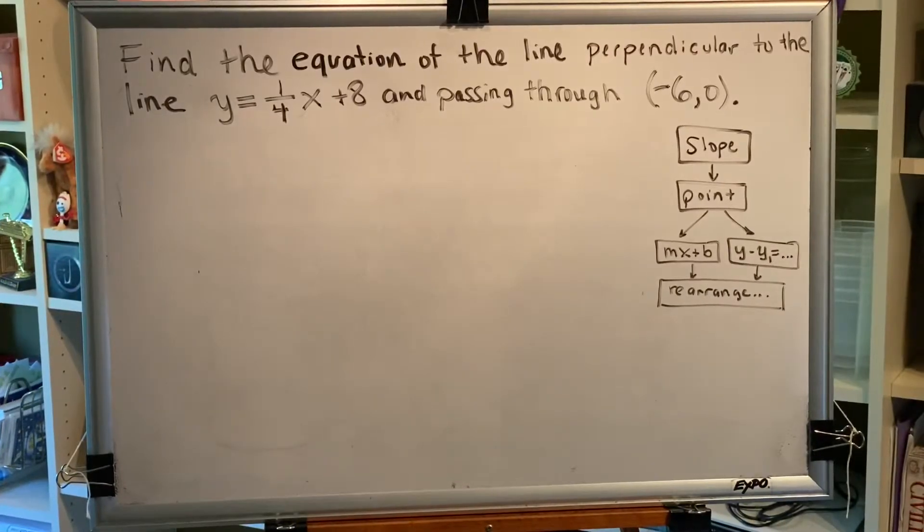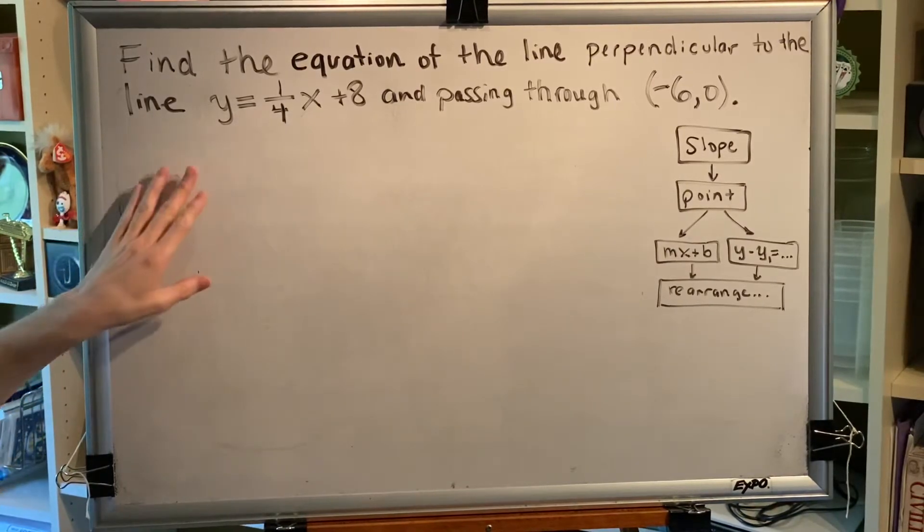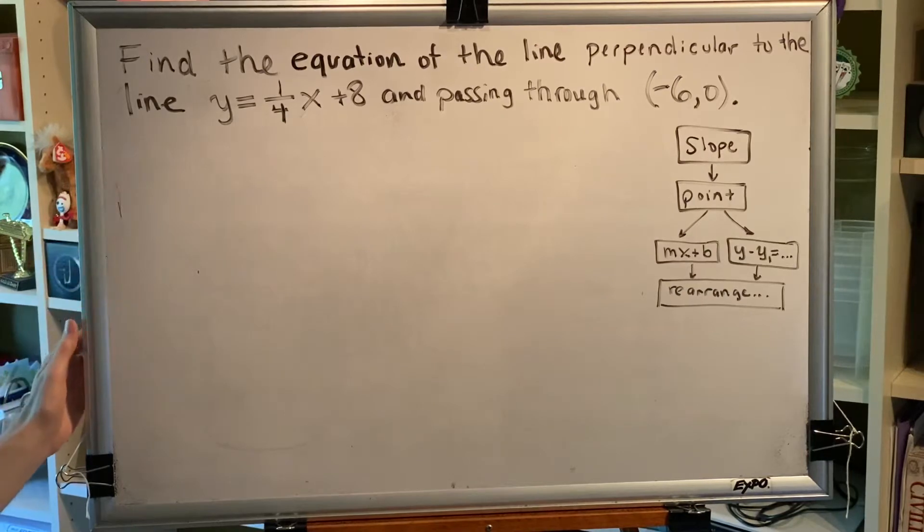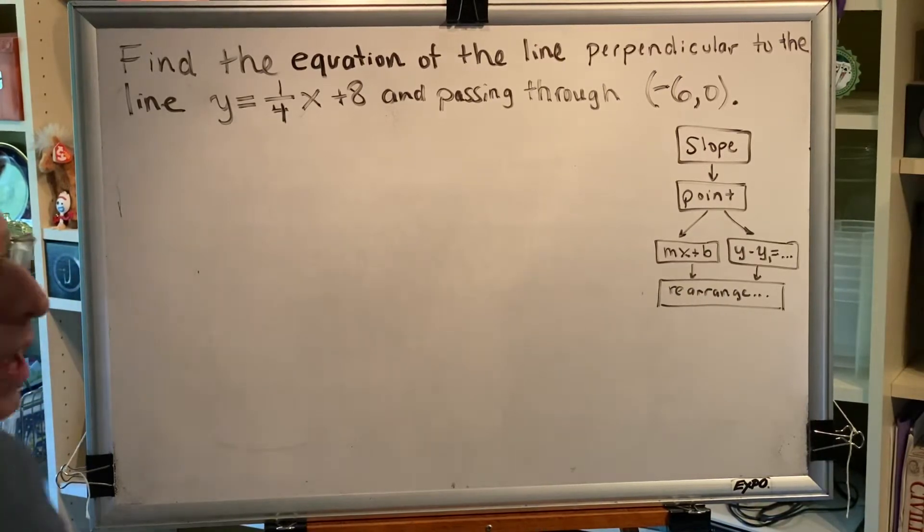The topic of this video is properties of tilted or slanted lines. Let's look at a problem. Find the equation of the line perpendicular to the line y equals 1 4th x plus 8 and passing through the point.